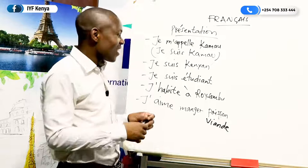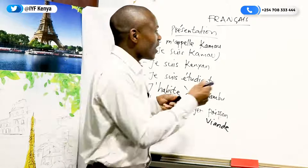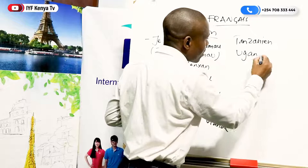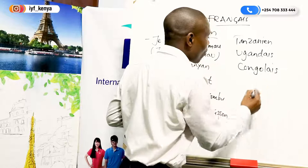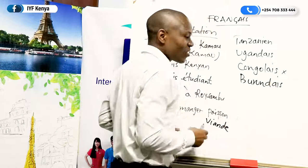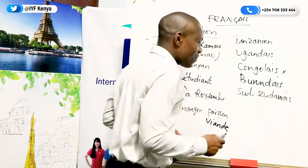Je suis étudiant, je suis Kenyan. If you are from Tanzania, you can say je suis Tanzanien. If you are from Uganda: je suis Ugandaen. And Tanzanien, we write like this — Tanzanien. Then we have Ugandaen. Congolais — we write it like that. And for South Sudan we have Soudanais — Soudanais. We'll also talk about these nationalities more in lessons to come.